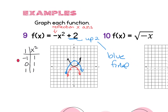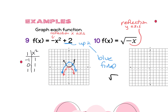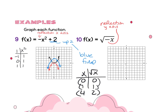For the next one, the negative is inside the grouping symbol, so this is a reflection across the y-axis. The parent is the square root function — I plugged in 0, 1, and 4, giving ordered pairs 0,0; 1,1; 4,2. After graphing those ordered pairs, I reflect across the y-axis by placing each point the same number of spaces away from the y-axis on the other side.